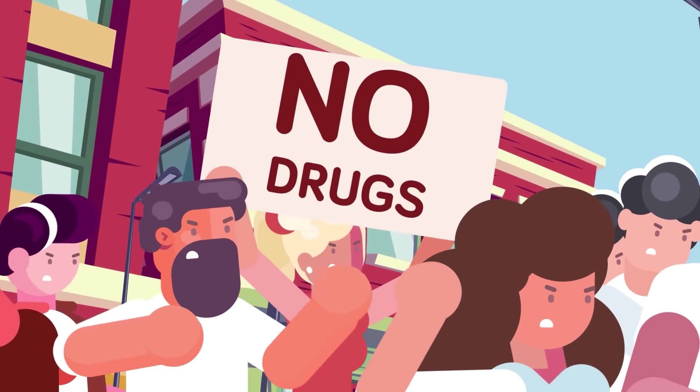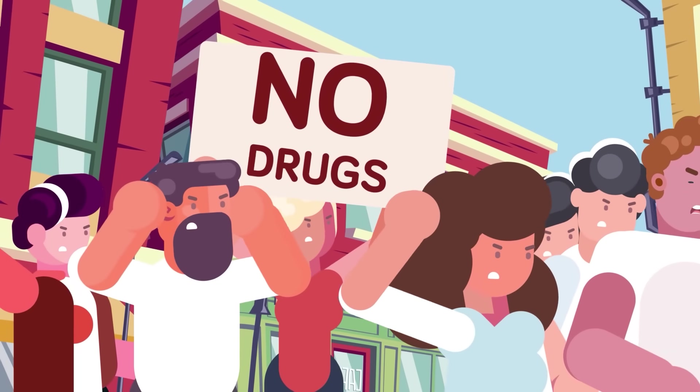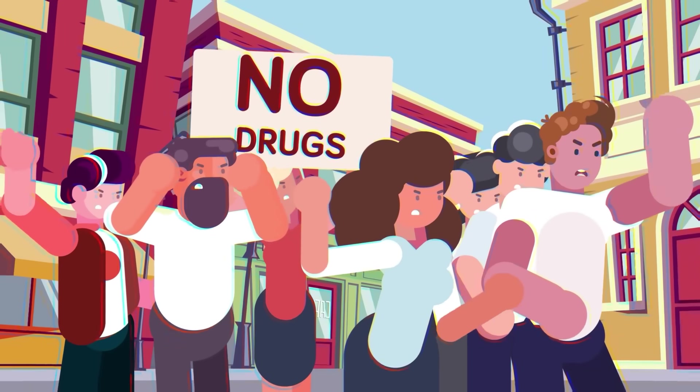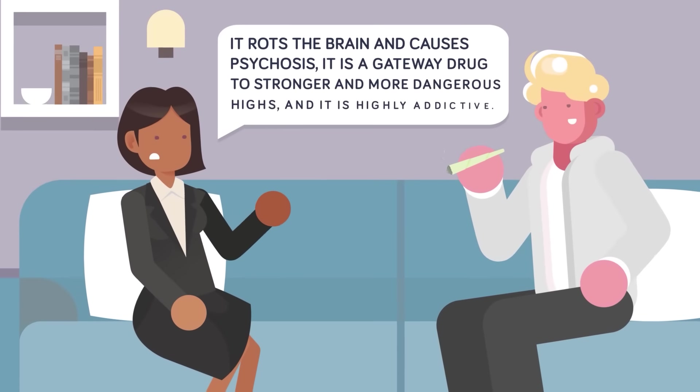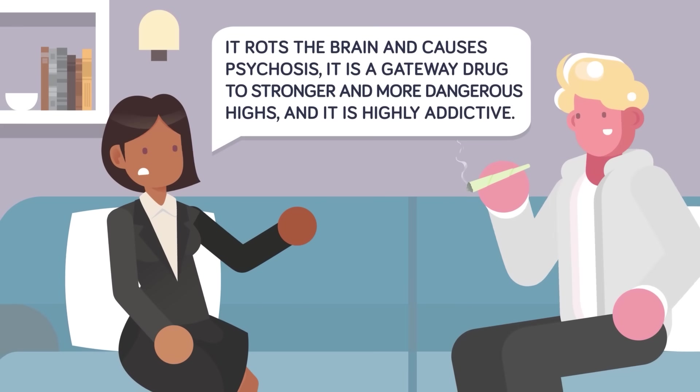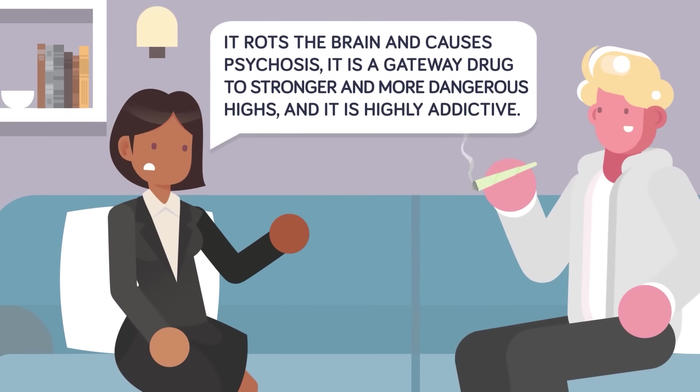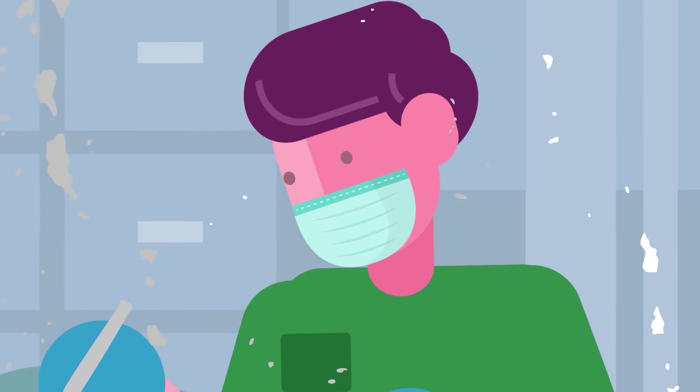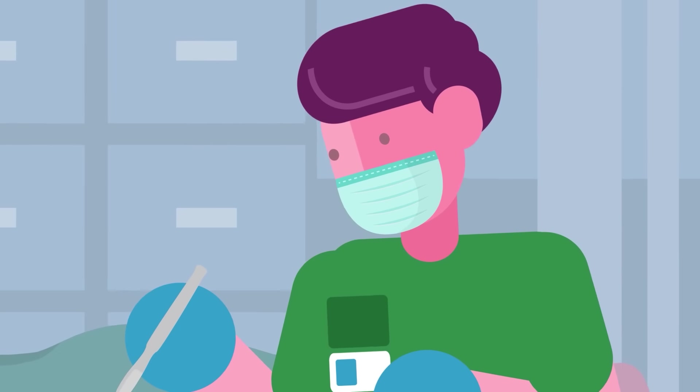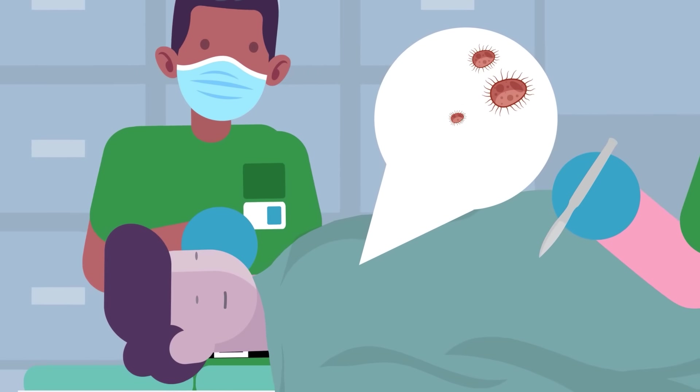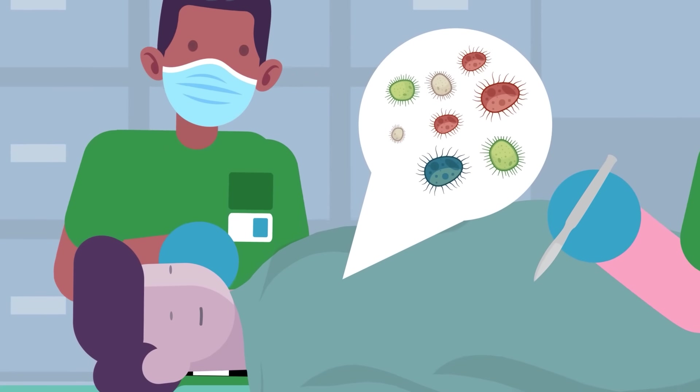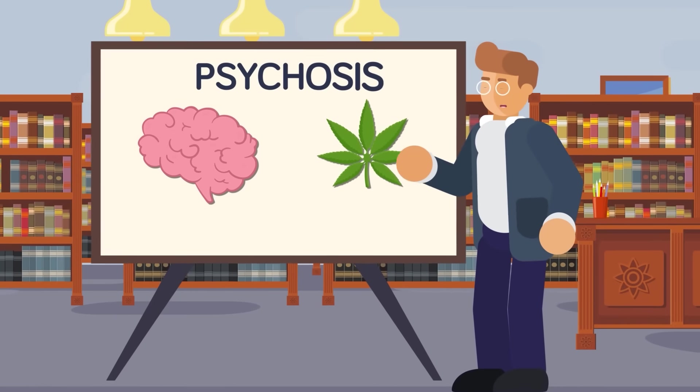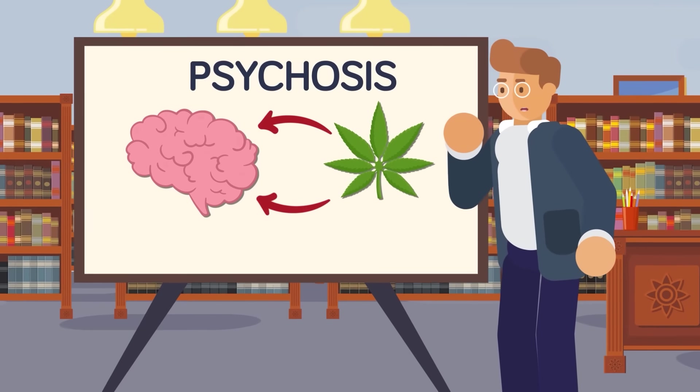A large amount of this campaign against drugs has involved a level of fear-mongering. There's a lot of false information swirling around the world about the negative effects these drugs have. It rots the brain and causes psychosis. It's a gateway drug to stronger and more dangerous highs, and it is highly addictive. But is there any truth to any of these claims? Let's examine them one by one. Firstly, no, marijuana does not rot the brain. Rotting is the decay of dead organic material as bacteria and fungi consume it. That simply doesn't happen. However, the link to psychosis is a much more contested field, with evidence for both sides of the argument.